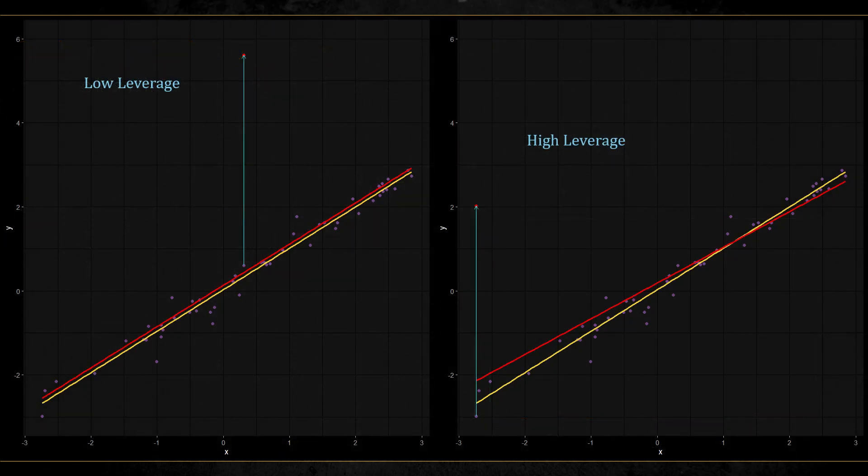Let's try to understand what role the leverage has. In both plots here, we see the data points in purple and the true regression line in orange. In the red line, we can see what happens when we accidentally add a value of 5 to a single observation. This increases the residual of that observation quite a lot. On the left, you can see the effect of this when we chose a point with a low leverage.